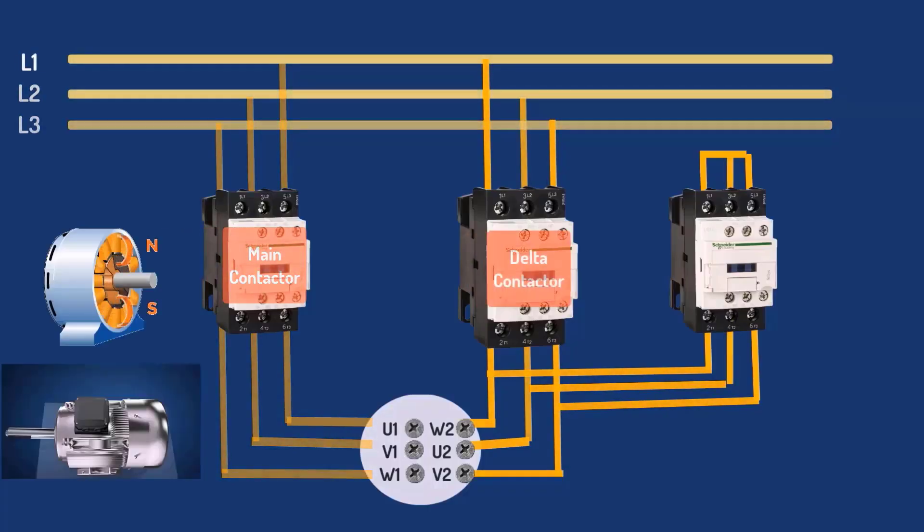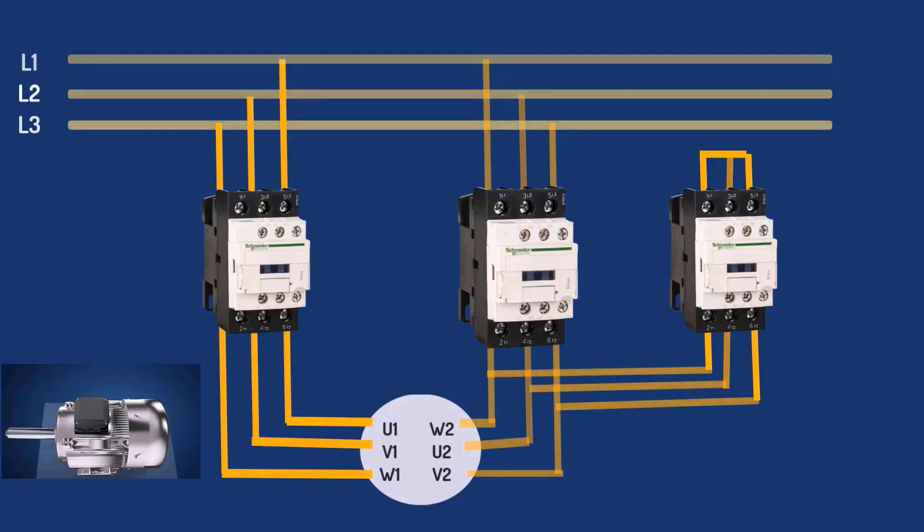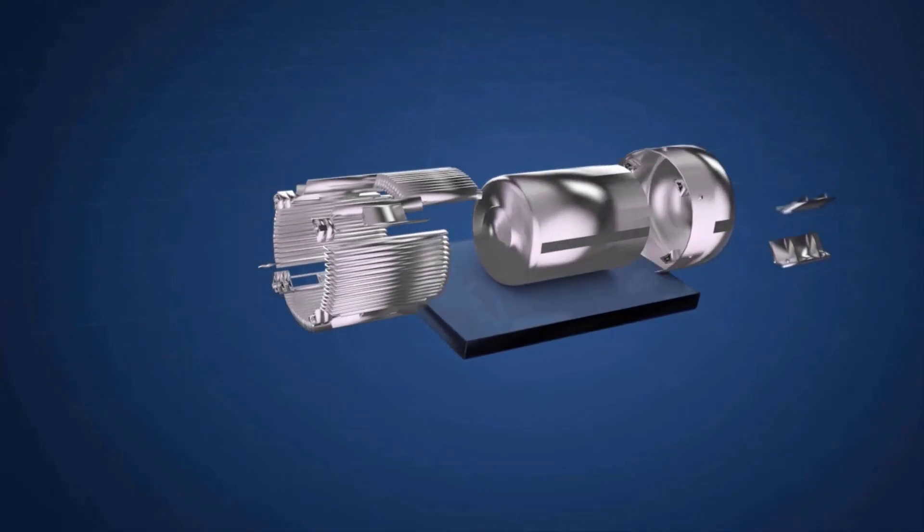We use star delta starters to reduce the current when the motor starts. By using star delta starters, we reduce the starting voltage which causes a drop in starting current. Let's understand what star and delta connections are, and we will also understand star delta wiring.